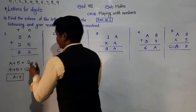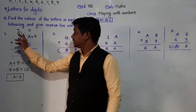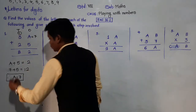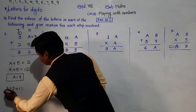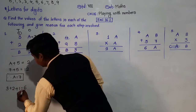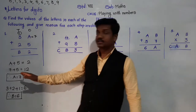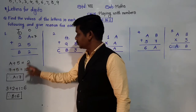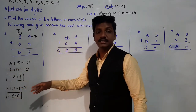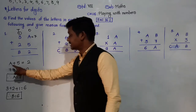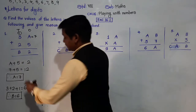A = 7, so 7 + 5 = 12, 2 came down, 1 carried. Now in the 10's place: 3 + 2 + 1 carry = 6. So B is equal to 6. Is there any other combination? No — there is only one digit, which is 7 itself. So A must be 7 and B must be 6.